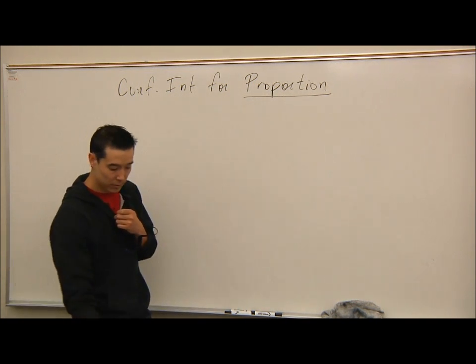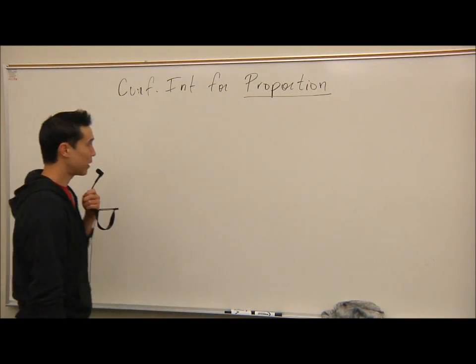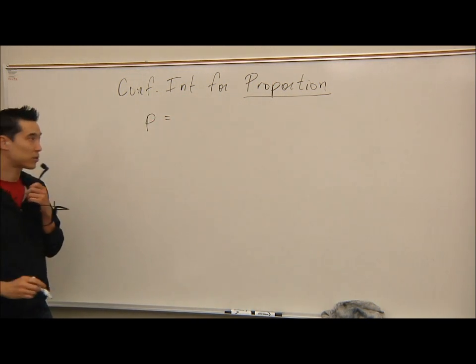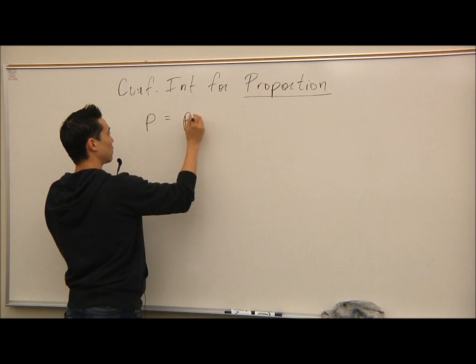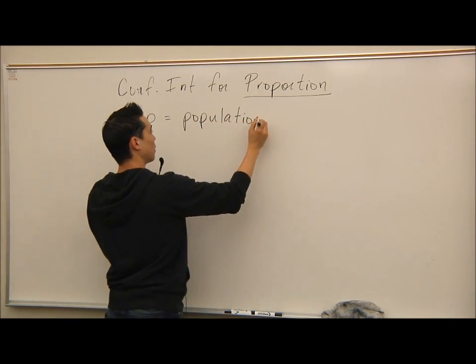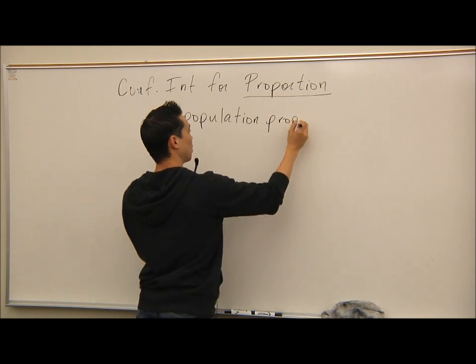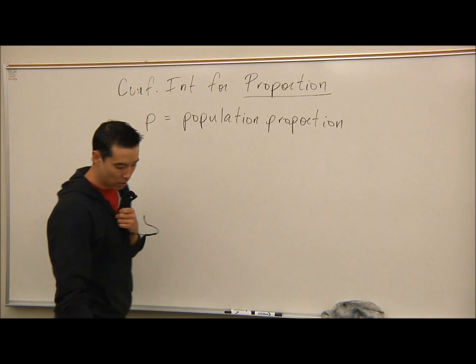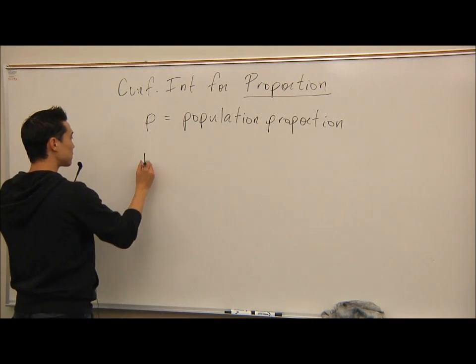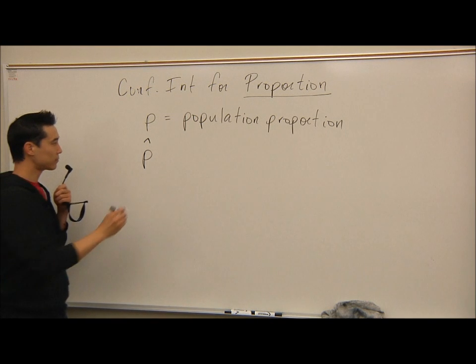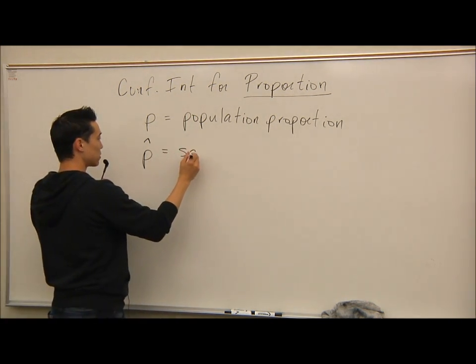I need to give you some new symbols right away. We have the letter P, which stands for the population proportion. We have P hat, which is a P with a little caret on it. This is our sample proportion.